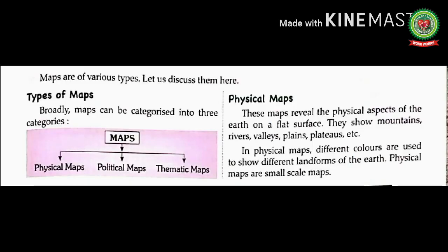Now students, come to page number 11. Next we will read types of maps. How many types of maps are there? There are three types of maps: number one, physical maps; number two, political maps; and number three, thematic maps. Maps are of various types; broadly, maps can be categorized into three categories.